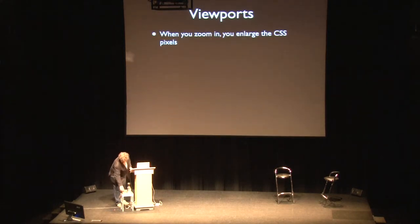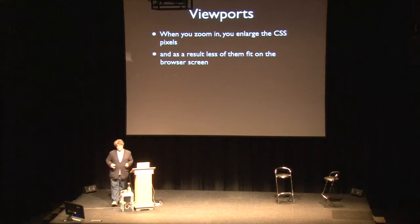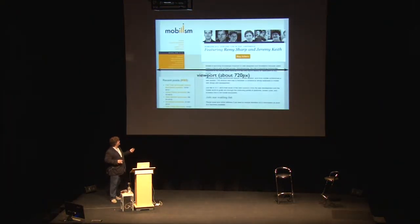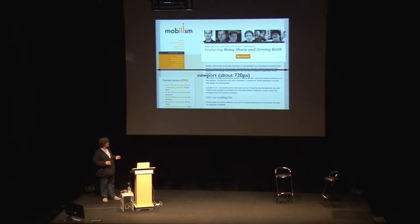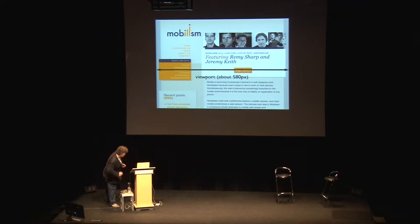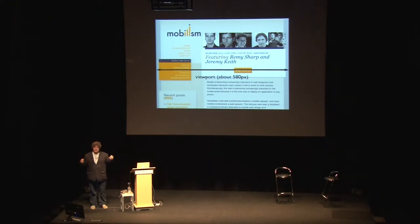When you zoom in, you basically enlarge the CSS pixels, which means fewer of them fit in the browser screen. That means that on desktop, the viewport becomes smaller. Here again, our site: the viewport right now is about 720 pixels. Now we zoom in with the same step as before, and now the viewport becomes about 580 pixels wide. You pretty much intuitively know all of this and don't really worry about it — which is good, because that's why the viewports and the CSS pixels are here. But in this presentation I want you to take one step further and think about what exactly is going on.